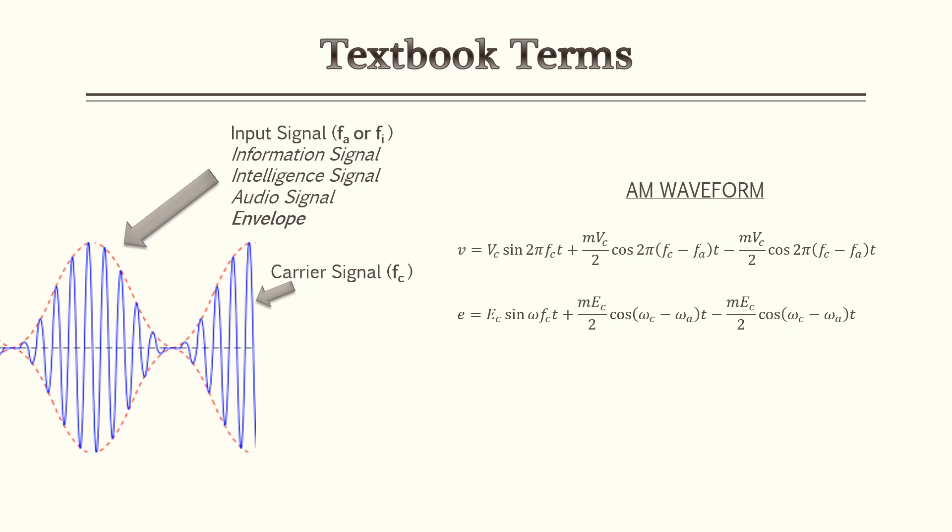Regarding the AM waveform equation shown to the right, two books may illustrate the same equation differently — for example, using E instead of V, or using 2π·frequency instead of the typical form. Be aware those two equations are the exact same thing written in two different ways. When taking notes, keep them simple and consistent so you're not confused by different subscripts. Our next video will have more examples and go more in depth on how to approach AM waveform problems.